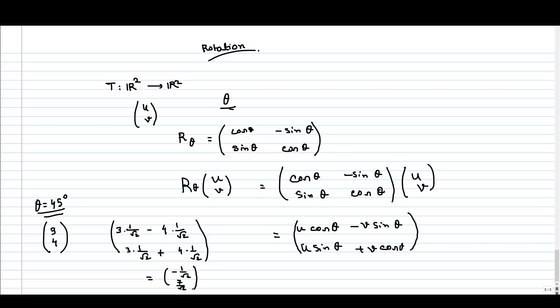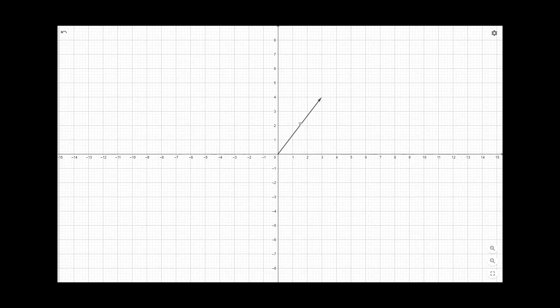Now, let us try to visualize this example in GeoGebra. This is our vector (3,4) and after rotating this, we will get some new vectors. Now if I rotate it, yeah, these are the new vectors. Depending on the degree of rotation, we will get different vectors as you can see in this diagram.